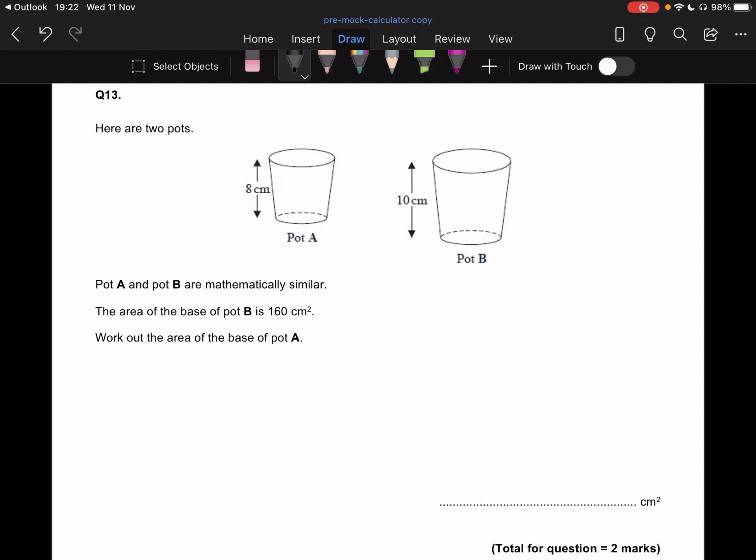Hello again, so I'm back with question number 13 from the first paper and this is an area scale factor question. So let's see it. We've got two pots, pot A and pot B.